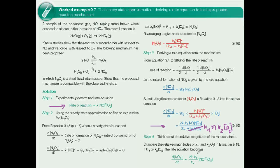This term is constant and equivalent to K, the overall rate constant for the reaction. This would be the case if the second step in the mechanism is sufficiently slow that it doesn't disturb the pre-equilibrium between NO and N₂O₂. Finally, note that this doesn't prove the mechanism is correct — merely that the mechanism is consistent with the observed kinetics.